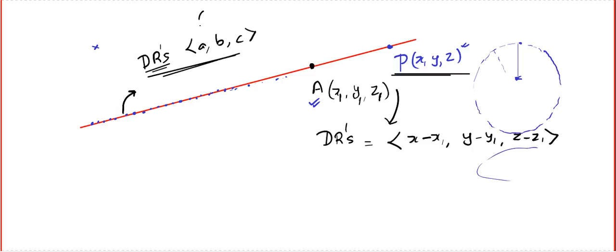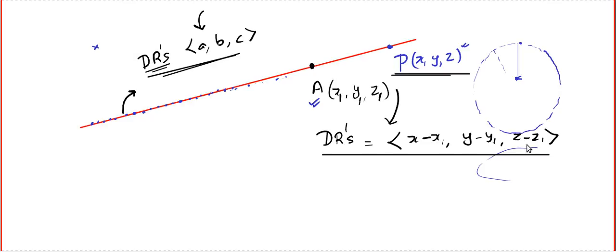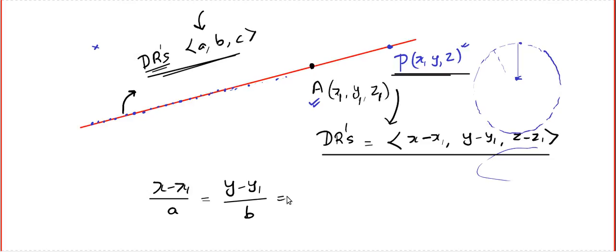The direction ratios are given to be A, B, C, and we calculated the direction ratios to be x minus x1, y minus y1, z minus z1. In lesson 1, we learned that if you calculate the direction ratios of the same line from different points, they are multiples — they are proportional. So we get the relation: (x − x1)/A = (y − y1)/B = (z − z1)/C. This is the Cartesian equation of a line in the three-dimensional plane.